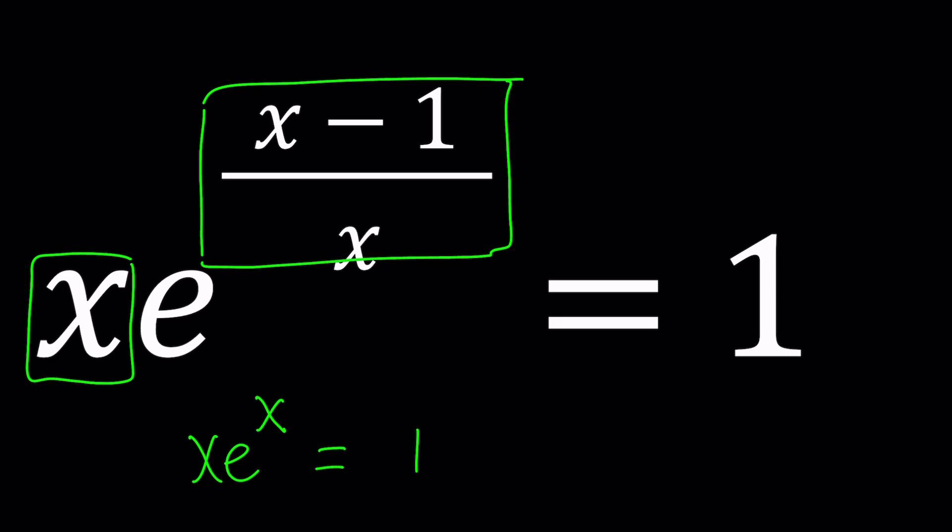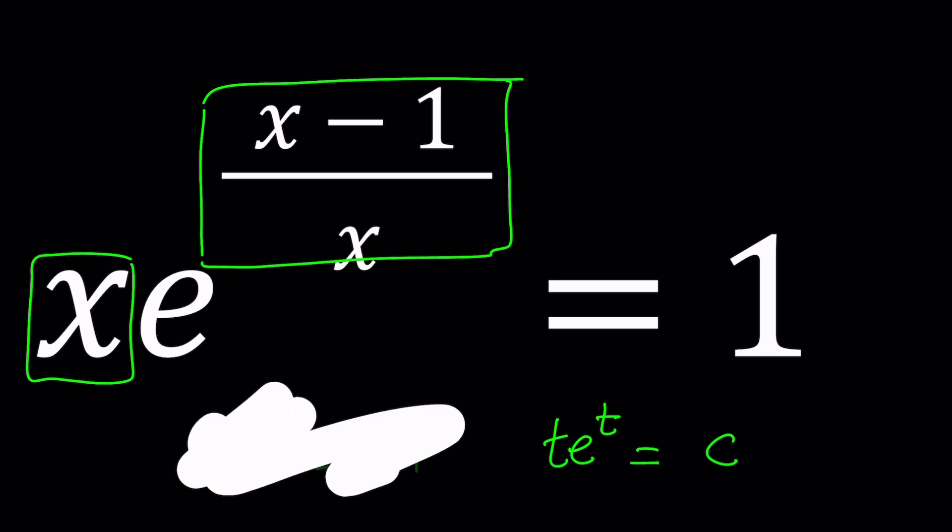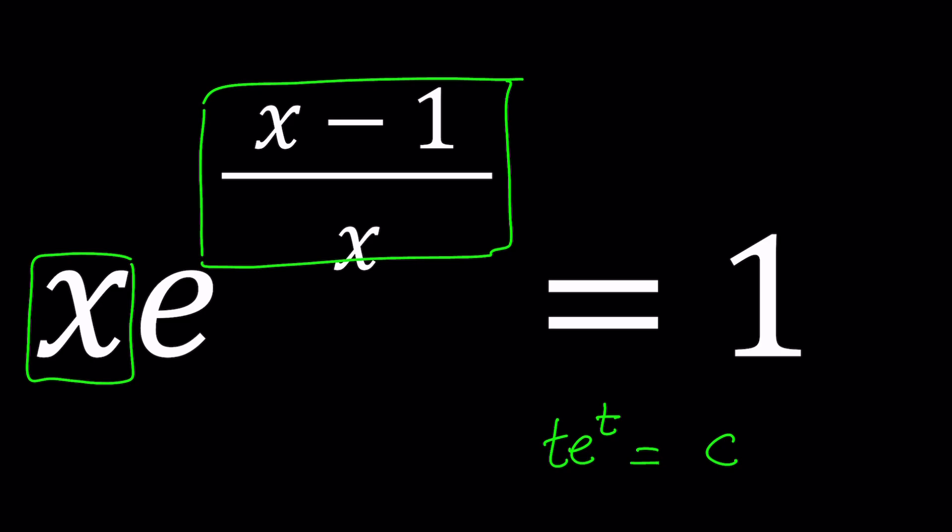So I want to put my function in a form like this. It doesn't have to be x, by the way. It could also be t e to the t. And it could equal any constant. It doesn't have to be 1, of course. So this is the more general form. That's the form I'm trying to get here. But how can I get to this form from the original? That is the million-dollar question for this problem.